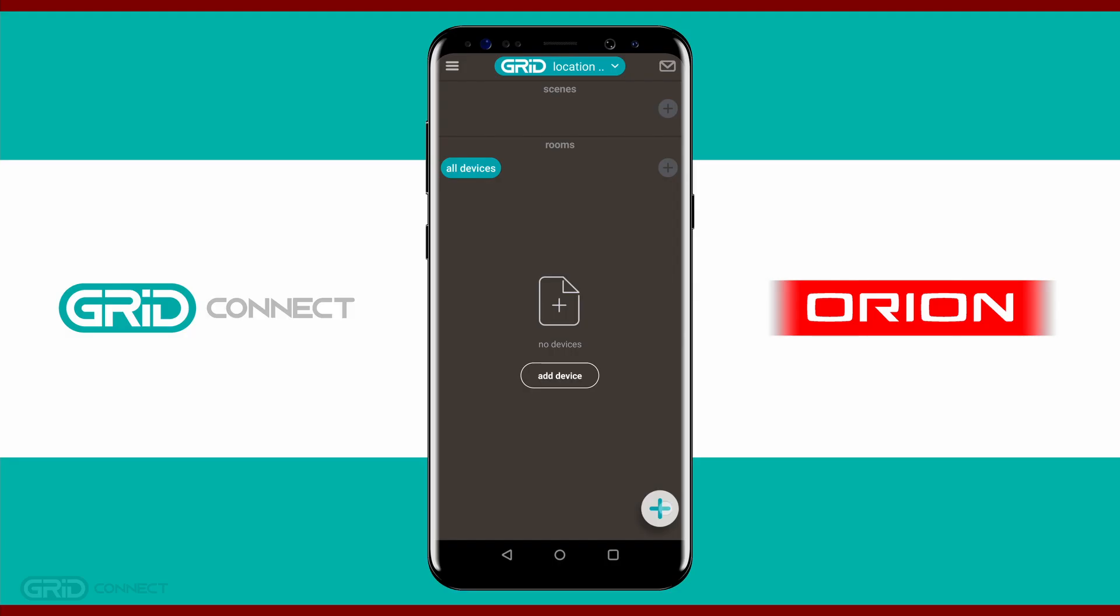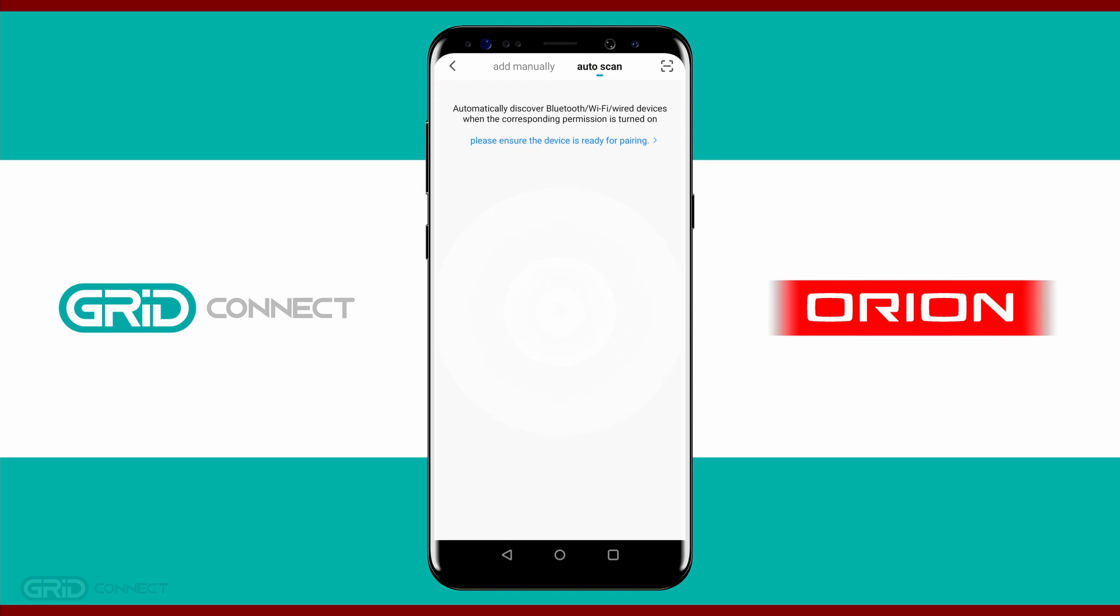Inside the Grid Connect app, press the plus icon at the bottom right of the screen, then select auto scan. When you see your device, press next. Follow the prompts and enter your Wi-Fi details and password.